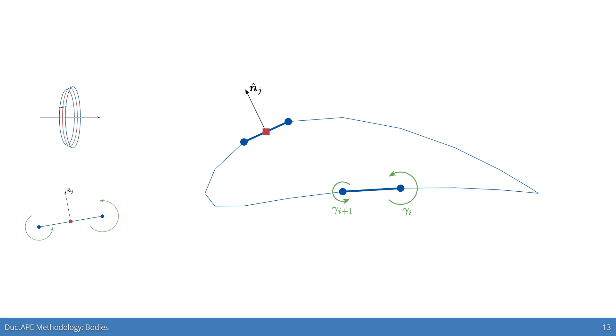In duct tape, we take into account both the free stream as well as rotor and wake-induced velocities when assembling the boundary conditions, thereby coupling the rotor and wake to the bodies.